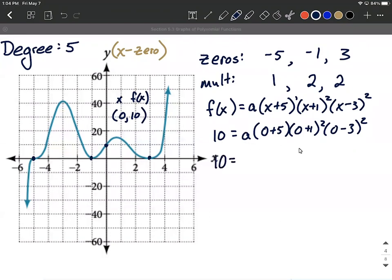So we have 10 equals a times zero plus five is five. Zero plus one is one squared gives us a one. I'm not going to write it here. Zero minus three is negative three. When we square it we get a nine. So now we're at the point we have 10 equals a times 45. To get a all by itself we'll divide by 45. Okay so that'll put a on the right hand side all by itself. With a little bit of simplifying down, these are both multiples of five, we can say a is going to be two ninths.